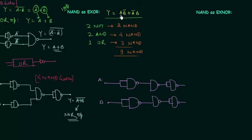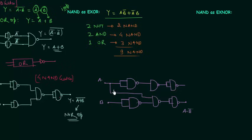The output of the first AND gate is A and B complement. We take A from here and it acts as input for this NAND gate, so the output here is A and B complement. For the second NAND gate, A complement and B is the output. We take B from here and the output here is A complement and B.